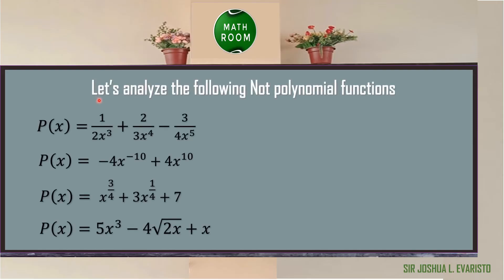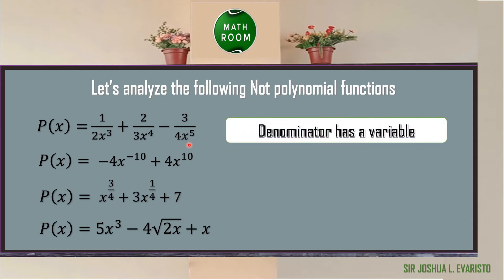Let us analyze the following non-polynomial functions. For number one, p(x) = 1/(2x³) + (2/3)x⁴ − (3/4)x⁵. This is not a polynomial function since the denominator has a variable.